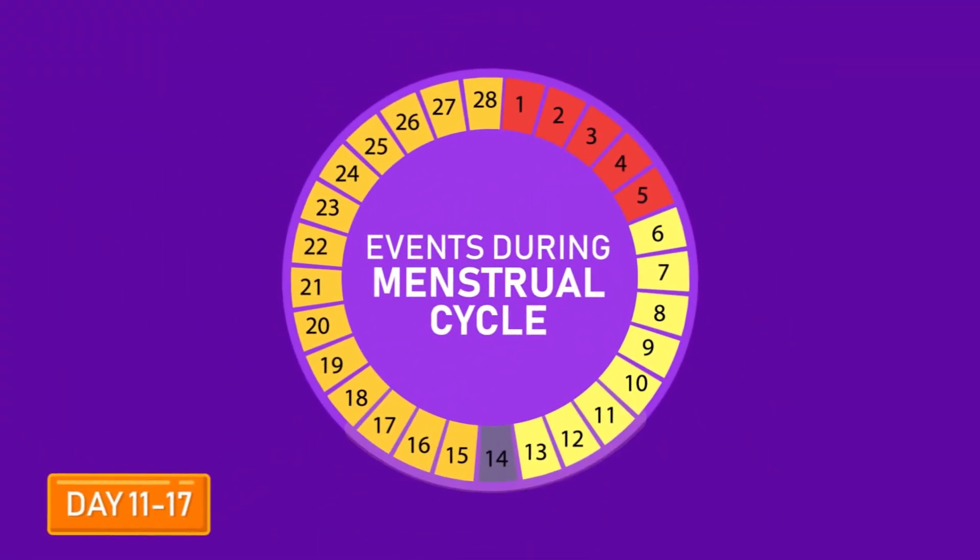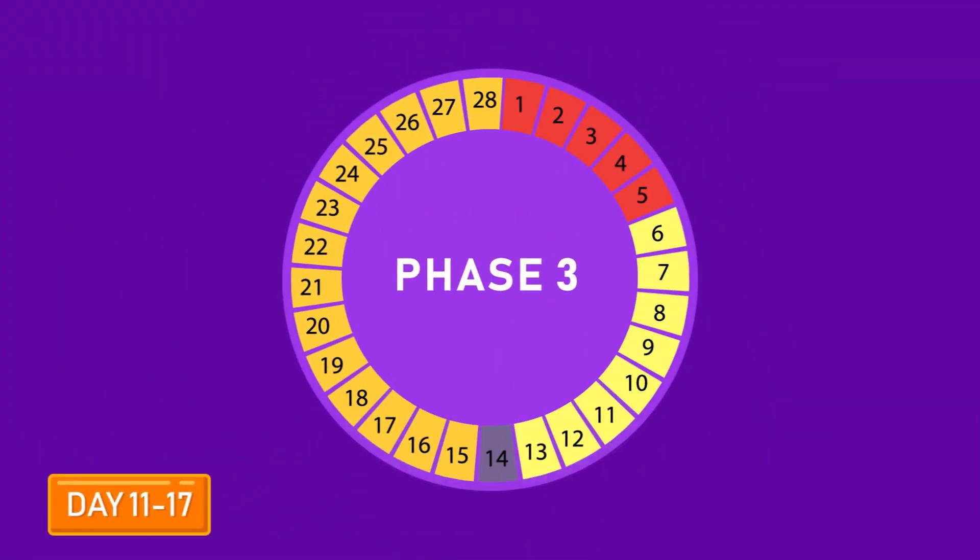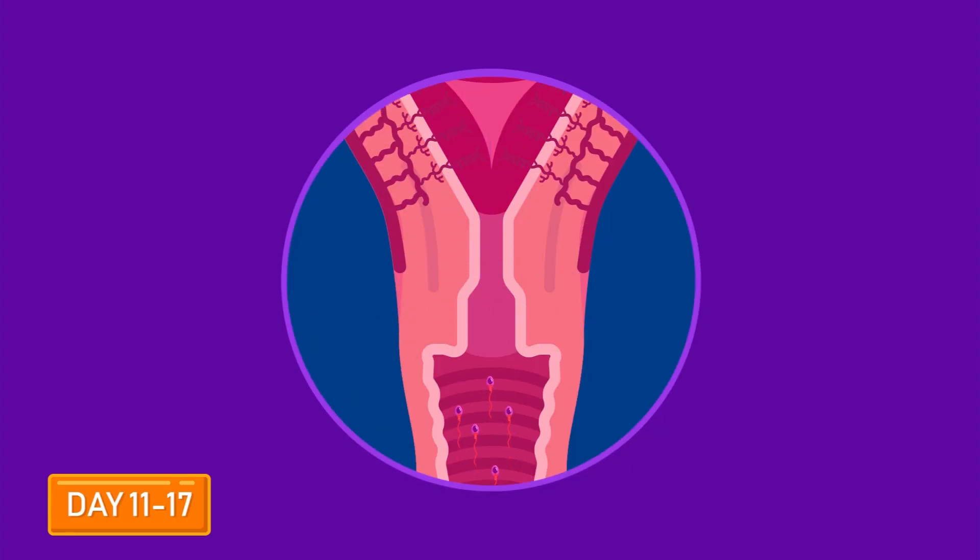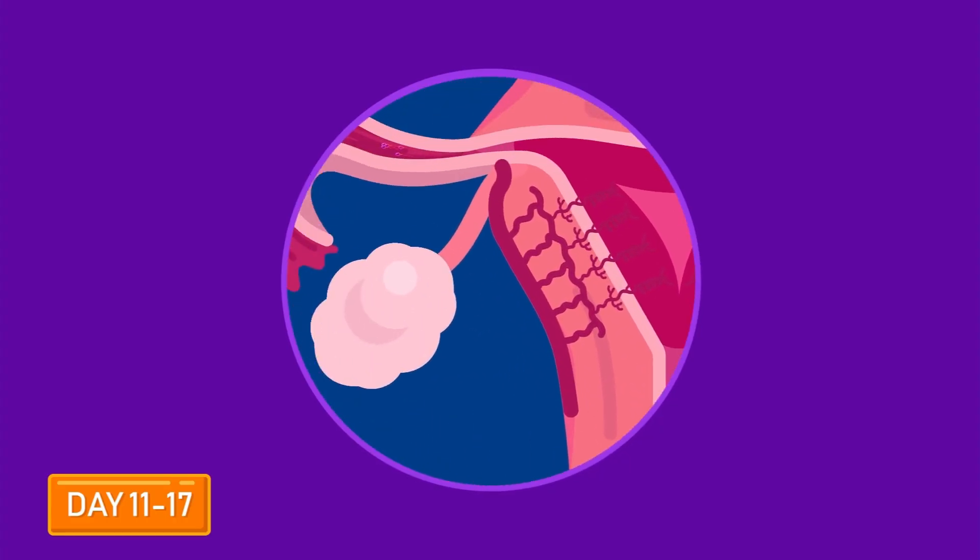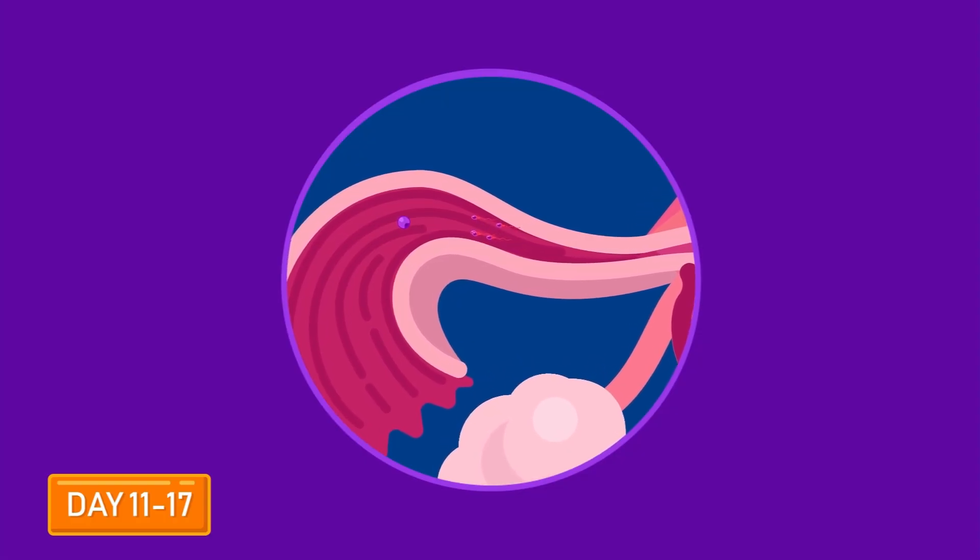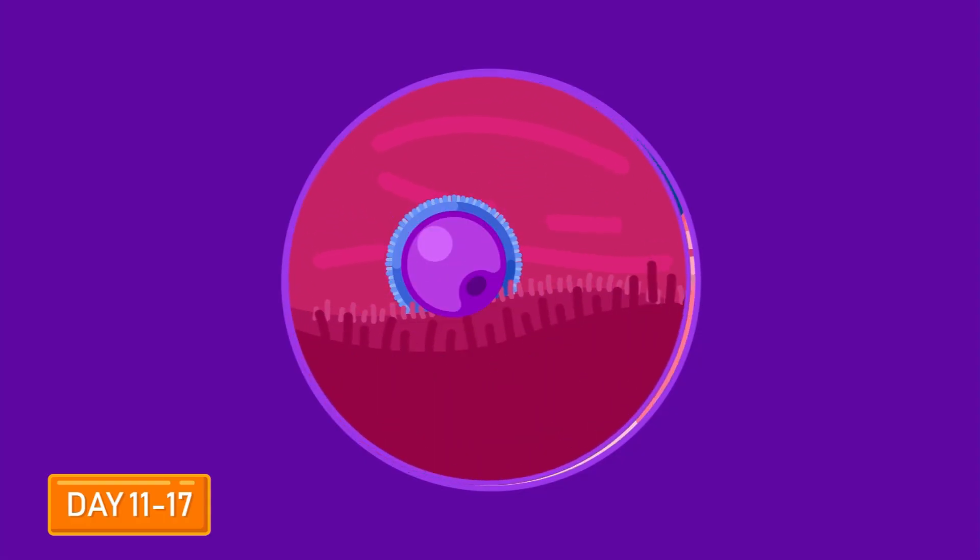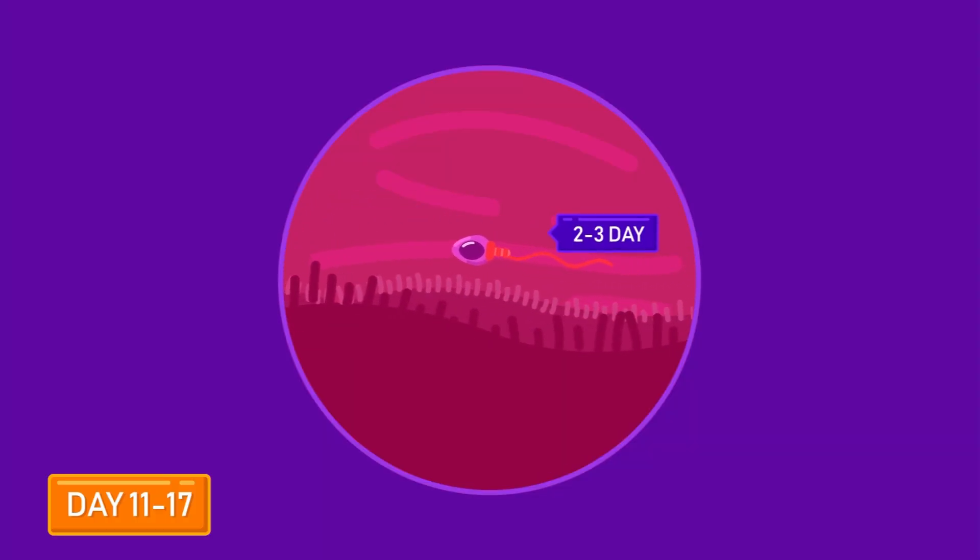Day 11 to 17, Phase 3. This is the fertile phase of the menstrual cycle. Sperms deposited in the vagina from day 11 onwards can fertilize the ovum, which is released from the ovaries on day 14. The ovum can survive for 1 to 2 days after ovulation, while sperms can survive for 2 to 3 days in the female reproductive system. Hence, fertilization is possible up to day 17.